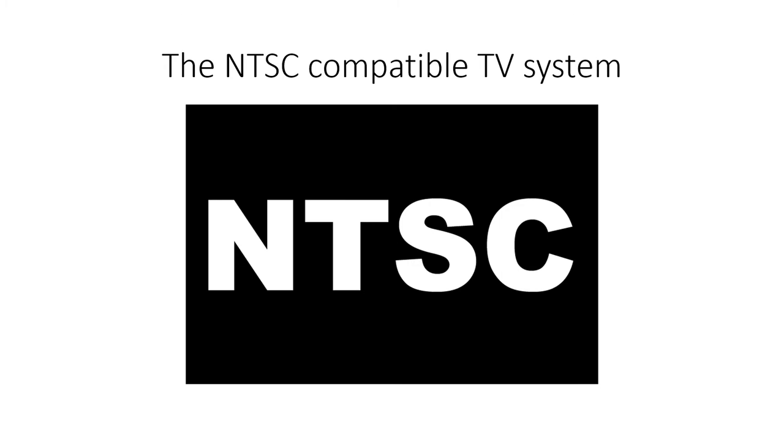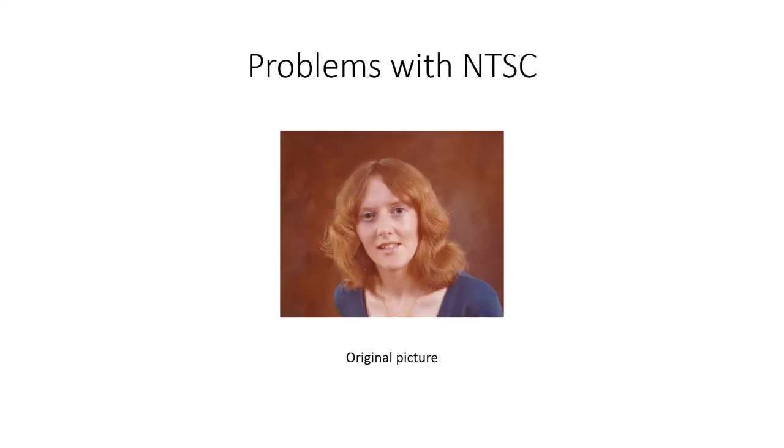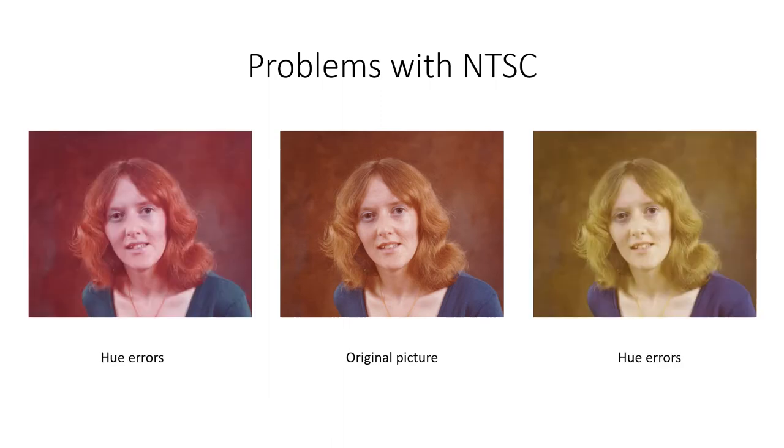However, for those that are interested, please see the difference between color and color. The color encoding process was that the hue of the colors tended to vary as you change channel. This meant that you had to adjust a control on the receiver each time you change channel to get a good color picture. The picture in the center shows the original color of the picture. And the two pictures on either side of the original show the effect of hue errors.